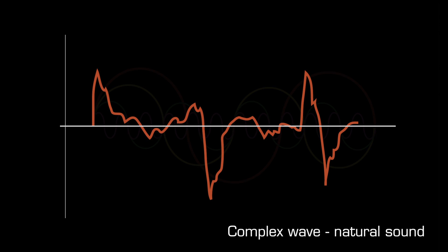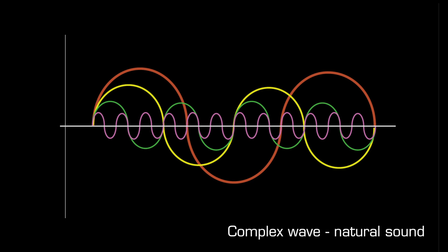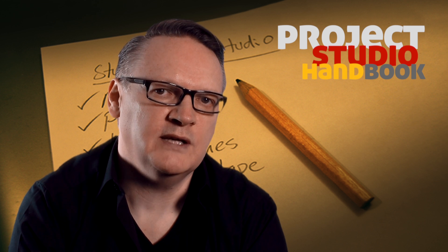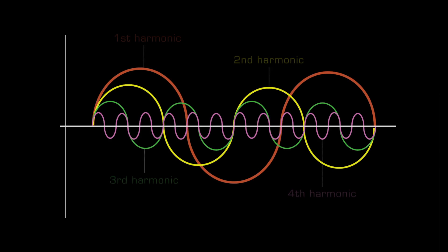Complex sound waves are formed from multiple individual vibrations, or sine waves, of different frequencies. Each sine wave in a complex wave is known as a harmonic.